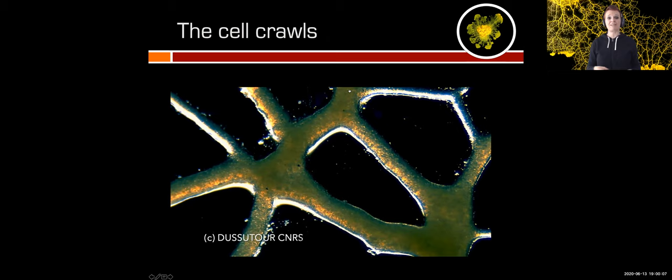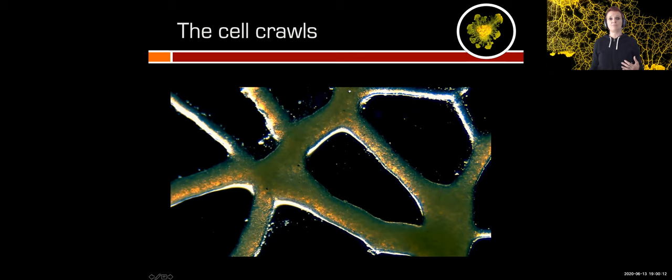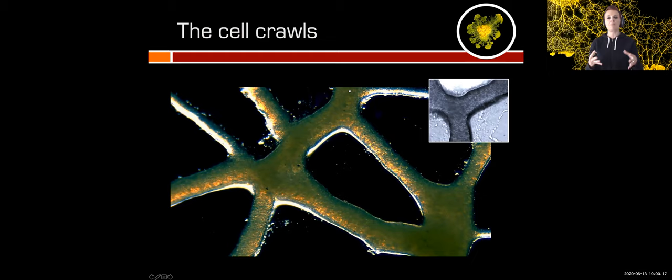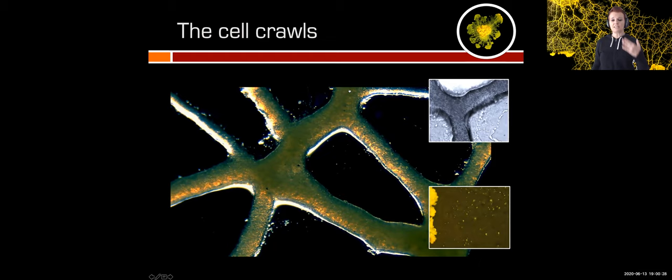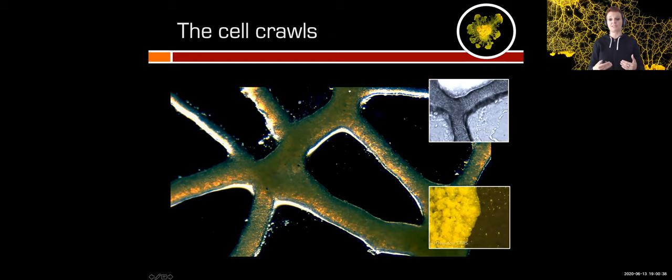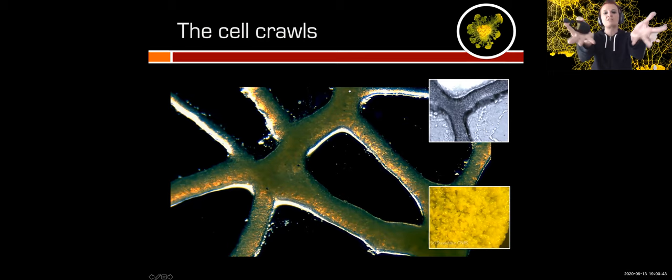This movement of cytoplasm within the cell is generated by the contraction of the veins, and these veins are made of actin and myosin fibers. They contract, and by contracting they push the liquid around. This is also the motor system of the slime mold. If you look at this video, you can see the membrane progressing on the substrate doing two steps forward, one step backward — corresponding to the shuttle streaming system. The slime mold pushes the cytoplasm, pulls it back, and pushes again, and like that it can move around.